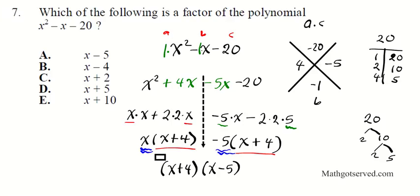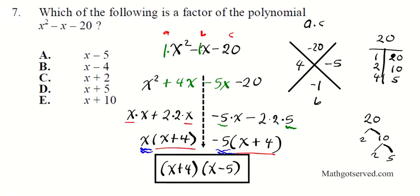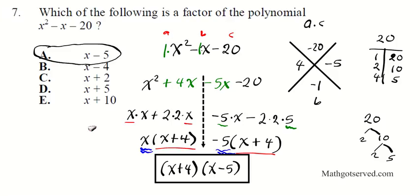The question asks which of the options is a factor. Looking at the choices, x minus 5 appears, so the answer is option B — that's one of the factors of x squared minus x minus 20.